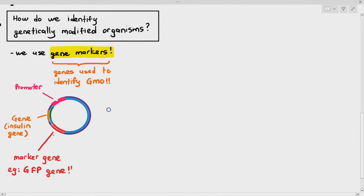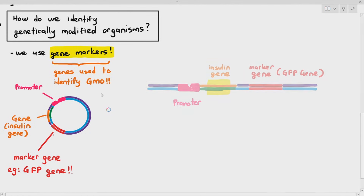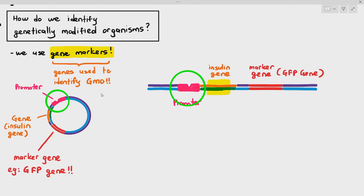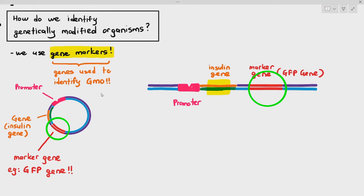If you notice, I use the words 'gene marker' and 'marker gene' interchangeably — it's the same thing. As you can see in this recombinant plasmid, it has a promoter, the insulin gene, and also the marker gene. They are all part of the plasmid.